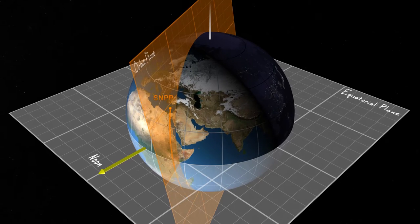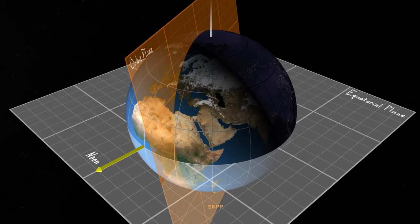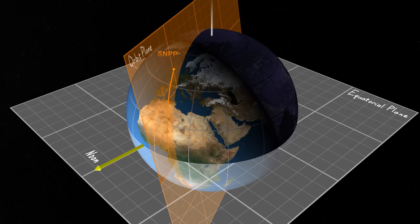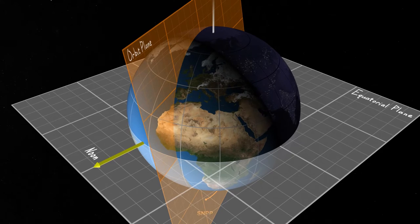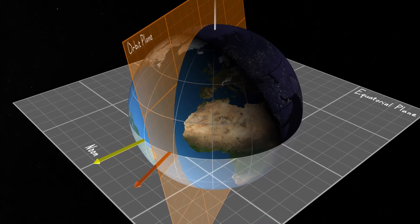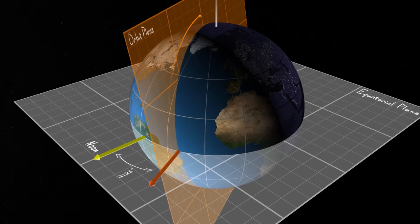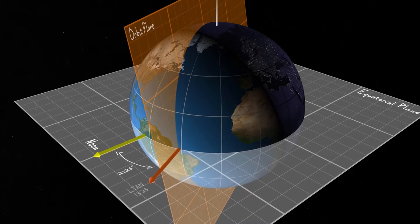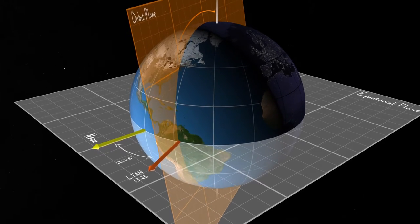The upward side of the orbit always crosses the equator at the same local time. This is called the local time of ascending node, or LTAN, which is measured from noon. In this case, the LTAN is 21.25 degrees from noon, at 13.25 or 1:25 PM local time.